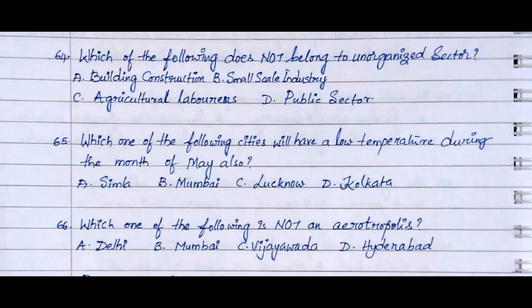Question 65: Which one of the following cities will have a low temperature during the month of May also? Option A. Simla, Option B. Mumbai, Option C. Lucknow, Option D. Kolkata. The answer is Option A. Simla.